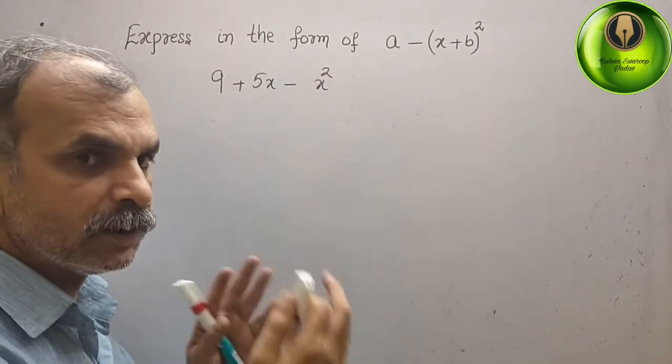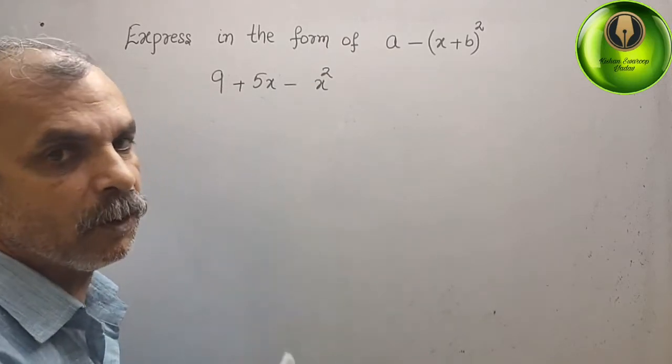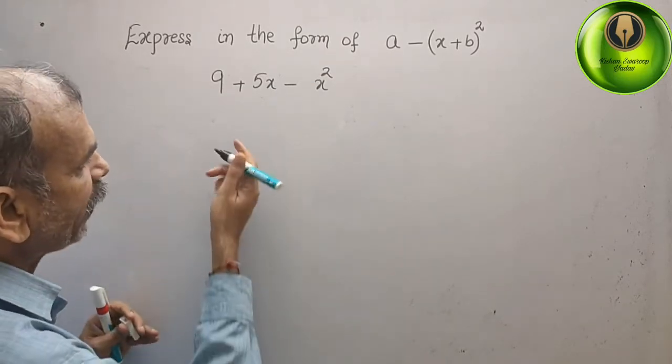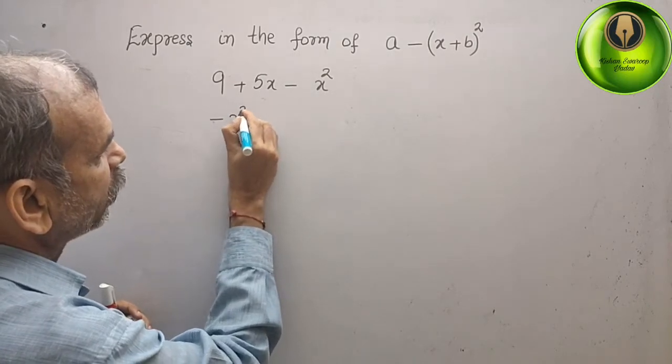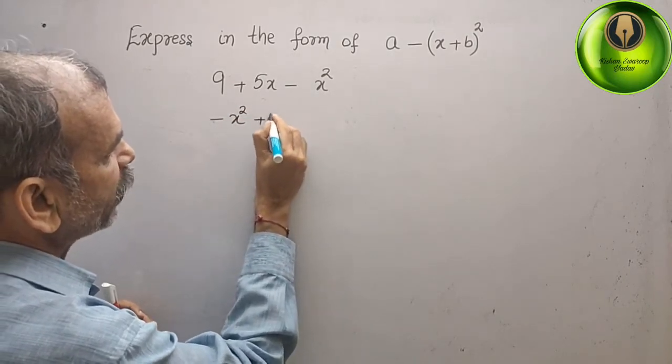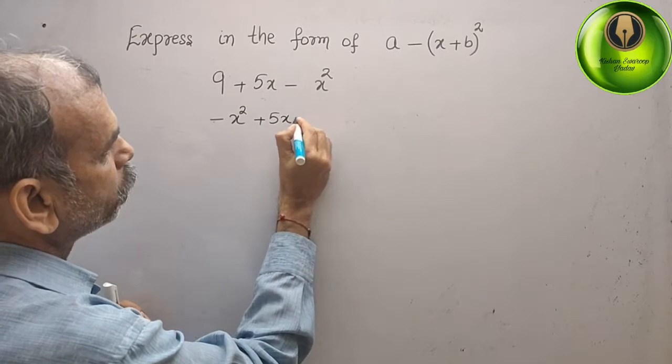Now what we have to do, just we have to make it in standard form. That is your minus x square plus 5x plus 9.